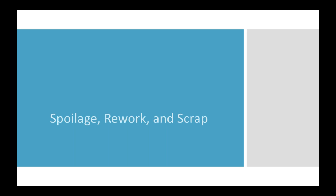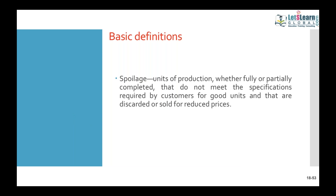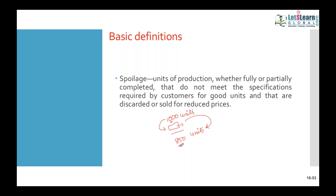In a normal production process we may have some production losses. These losses are broadly classified into normal spoilage and abnormal spoilage. Spoilage is the loss of units of production — for example, we had an input of 1000 units of material but received an output of 850 units. The balance of input which did not result in output is called spoilage.